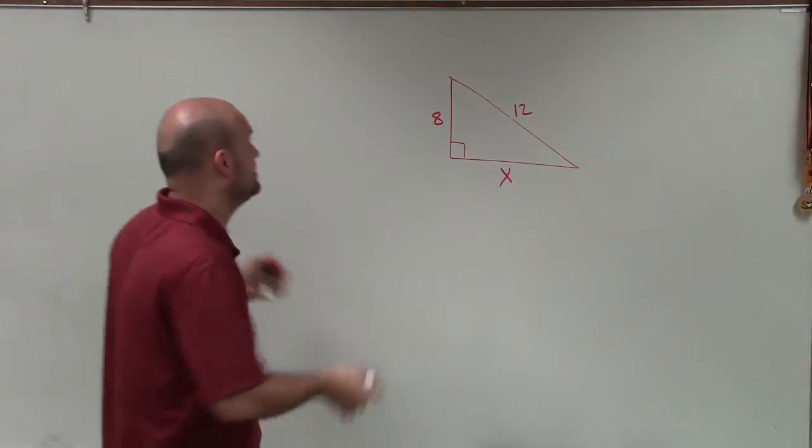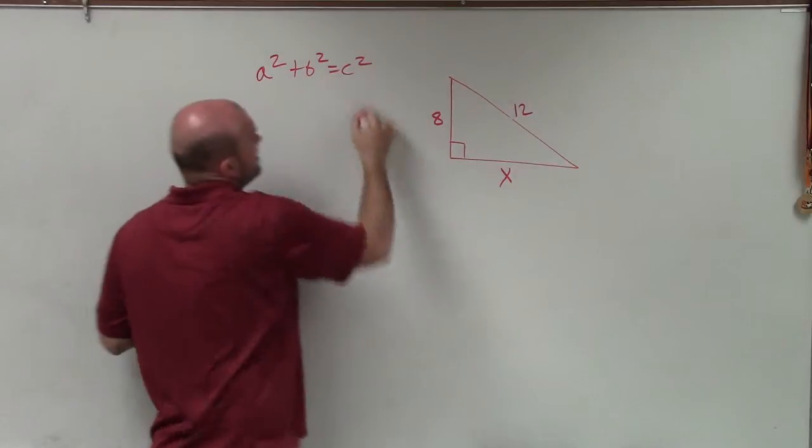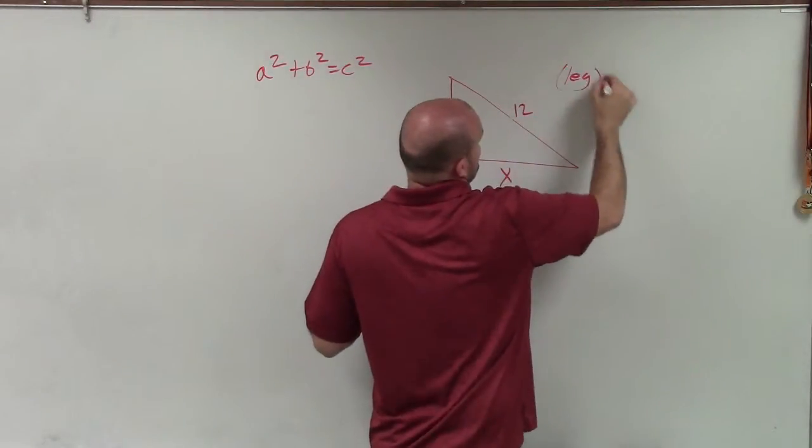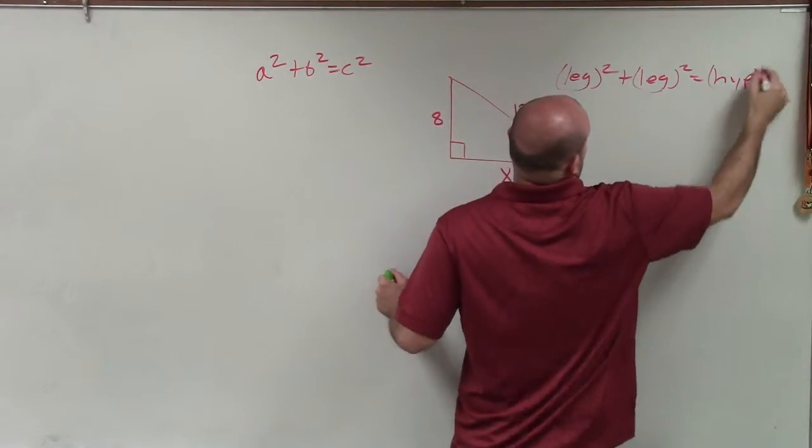Now, again, remember the Pythagorean theorem. A lot more commonly it's used as a squared plus b squared equals c squared. However, I like to write it as leg squared plus leg squared equals my hypotenuse squared.